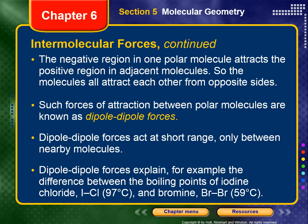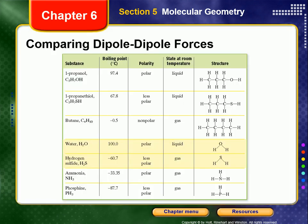The negative region in one polar molecule attracts the positive region in an adjacent molecule. Such forces of attraction between polar molecules are known as dipole-dipole forces. Dipole-dipole forces act at short range, only between nearby molecules. They explain, for example, the difference between the boiling points of iodine chloride (ICl) and molecular bromine (Br2): ICl has a much higher boiling point because Br2, with identical electronegativity on both atoms, has a perfectly even charge distribution and no dipole.